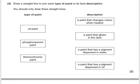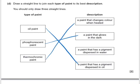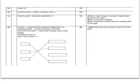Draw a straight line to join each type of paint to its best description — you should only draw three straight lines. Oil paint: it is a pigment dispersed in oil. Phosphorescent paint: this hasn't been covered in this tutorial, but a phosphorescent paint is one which glows in the dark. Thermochromic paint also came up earlier — it is a paint that changes colour when it is heated. Those are the allowable answers for each of those questions.